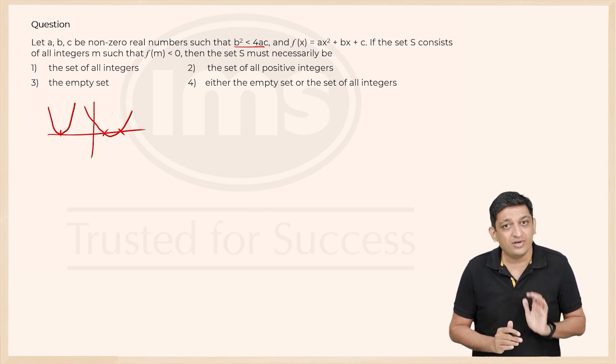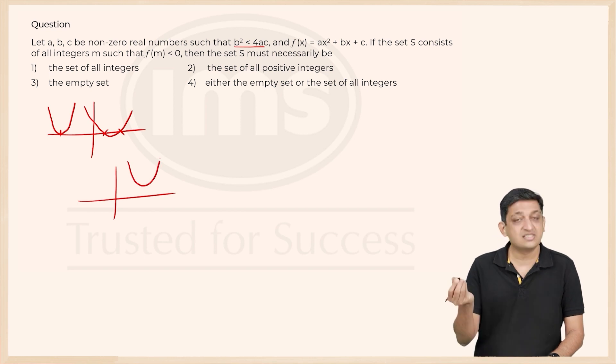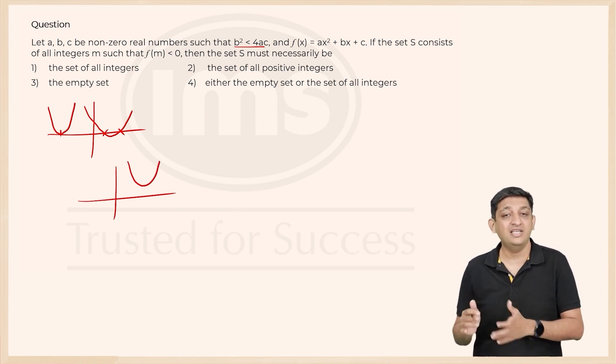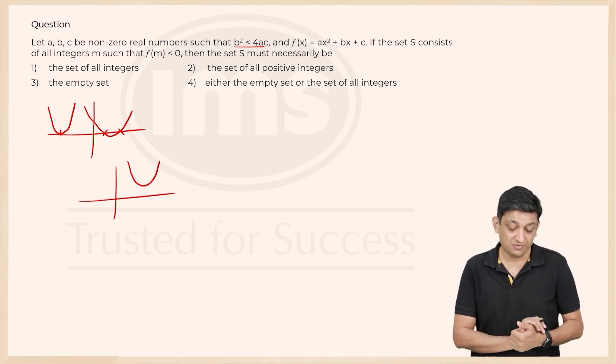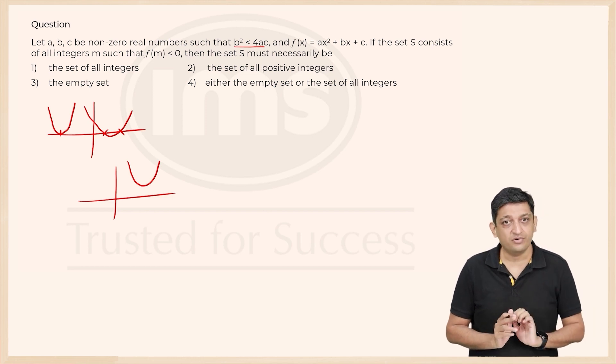When b² is less than 4ac, what is going to happen is you will have a solution set which looks like this. It does not intersect the x-axis at all, meaning there are no real roots to this particular equation. So this is what we mean when b² is less than 4ac.